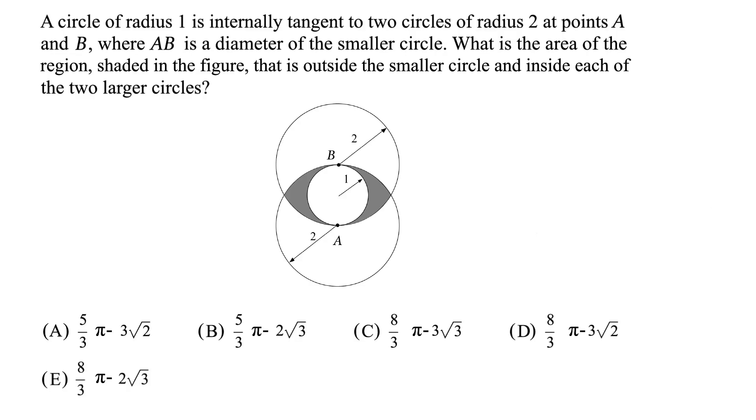A circle of radius 1 is internally tangent to two circles of radius 2 at points A and B, where AB is a diameter of the smaller circle.